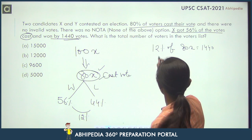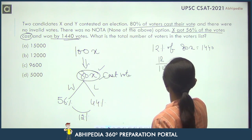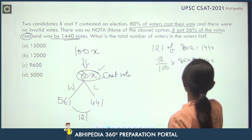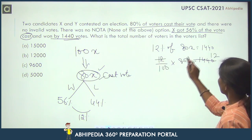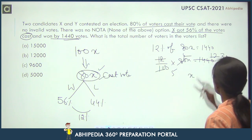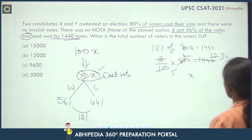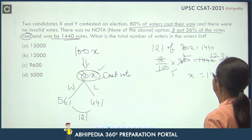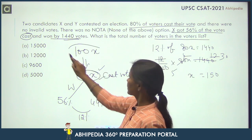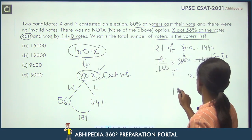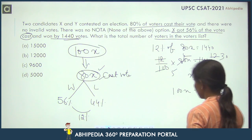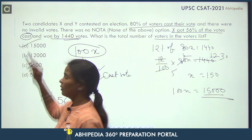Simple — you will solve and get the answer. Yahan pe apne paas jo value hai, x is equal to 150. Aur unhone kya poocha hai — number of votes in the voter list. Number of votes kitni thi? 100x, that means 100x is equal to 1500. So your answer will be 1500.